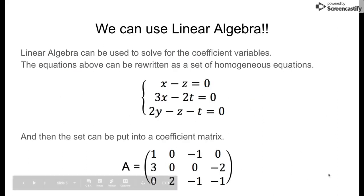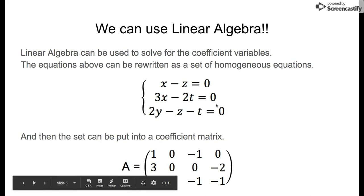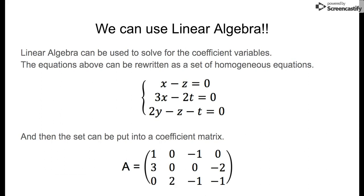We have our three equations, and to make them a little bit easier to deal with, we turn them into homogeneous equations. This brings all the variables to the left side of the equation and sets them all equal to zero. Then we can put the set into a coefficient matrix.